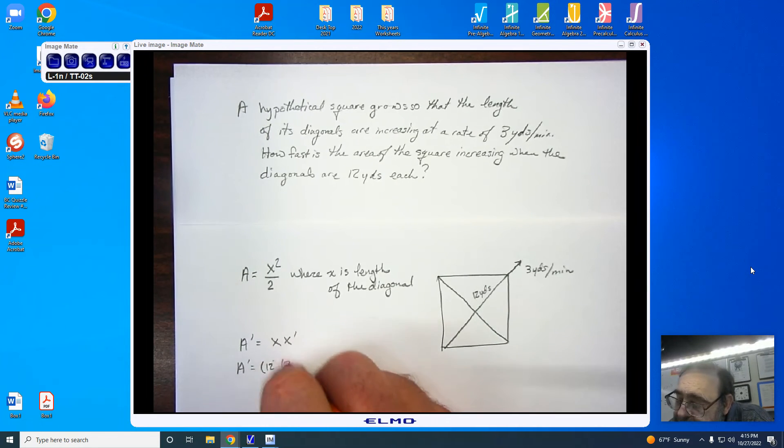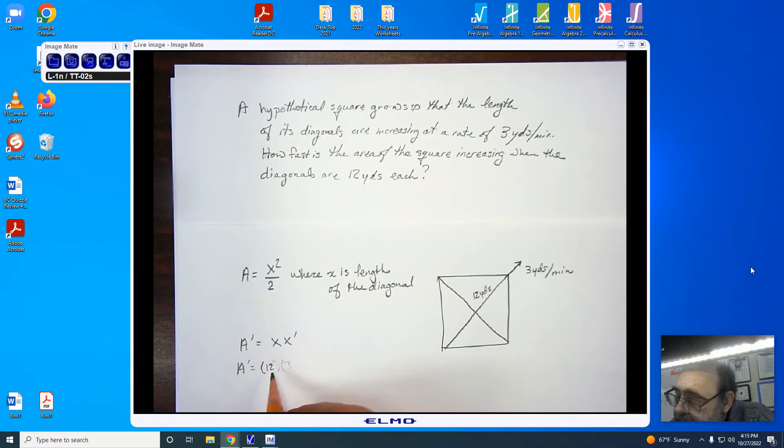And you'll notice I'm going to get area prime, where the change in the area is 36 yards squared per minute.